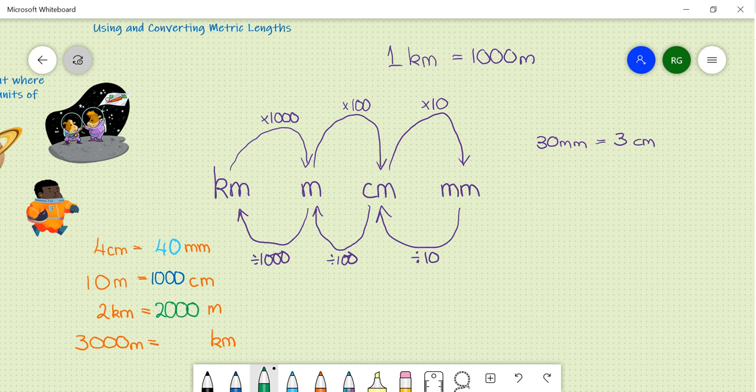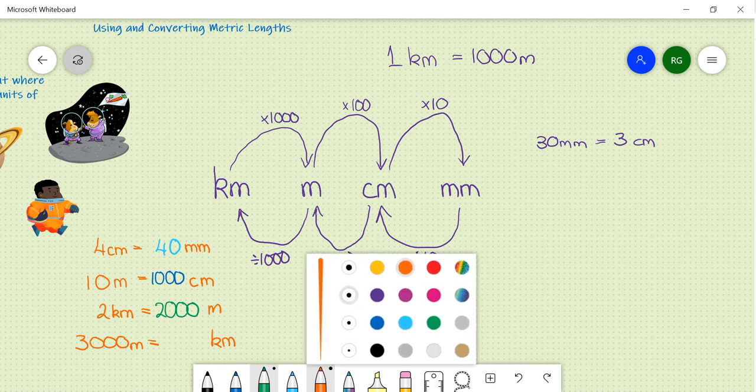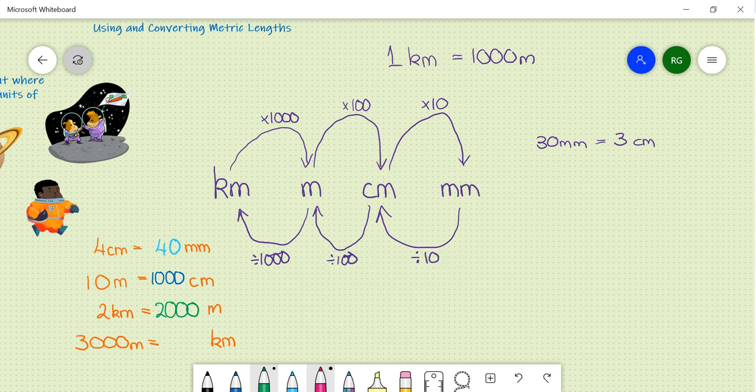And finally, one example going in reverse, is three thousand metres going into kilometres. Therefore, we have to divide by one thousand. So, three thousand divided by one thousand is simply three.